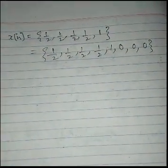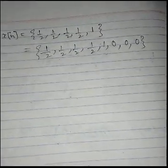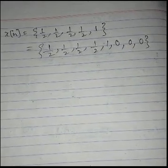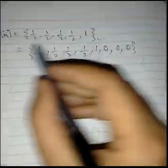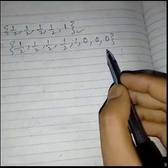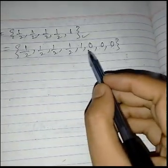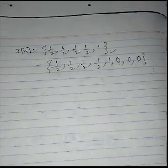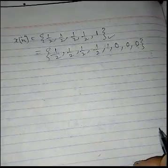I'd like to share a really fast way to solve the Fast Fourier Transform, which will be helpful to anyone preparing for the DCAP exams. In the FFT you're given a problem with five terms. The first thing you do is make eight terms out of that by adding three zeros to the end, making it eight.